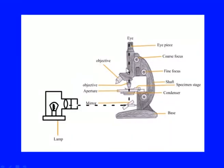There is a coarse focus and a fine focus, which allow you to adjust the microscope accordingly for focusing on the specimen. The fixed tube length is almost around 160 millimeters, as widely accepted.